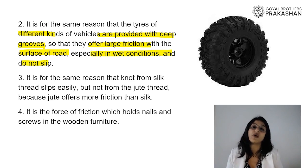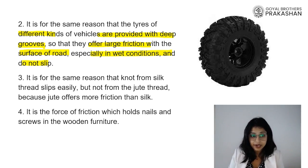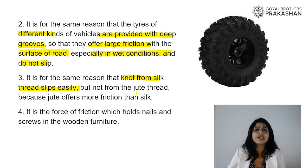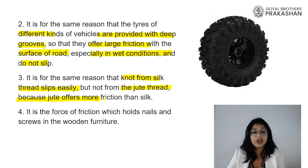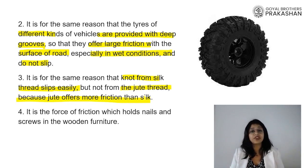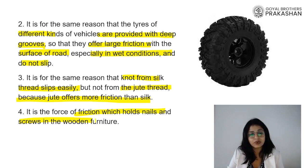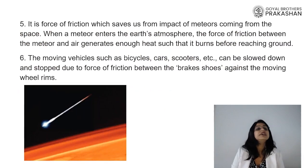If a vehicle slips it can cause an accident. Also, a knot from a silk thread slips easily because silk has less friction. On the other hand, a jute thread offers more friction, so a knot tied on jute thread stays in place. Similarly, the force of friction holds nails and screws in wooden furniture; otherwise they would keep slipping out.